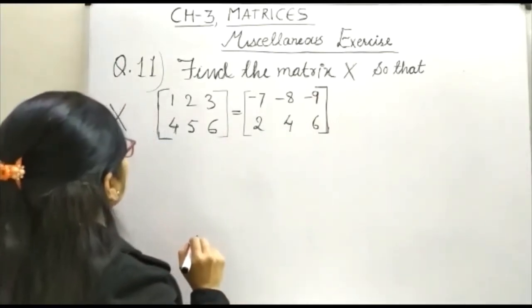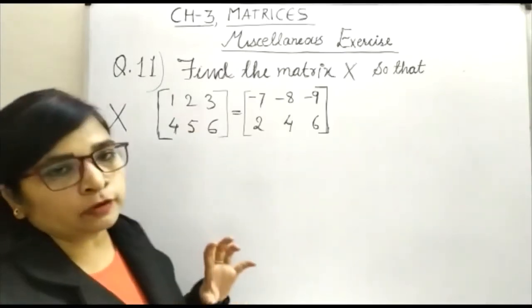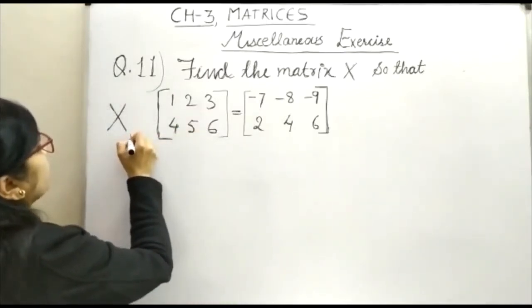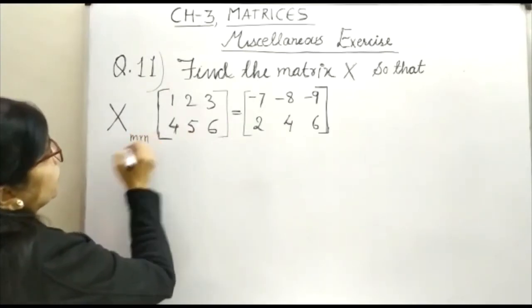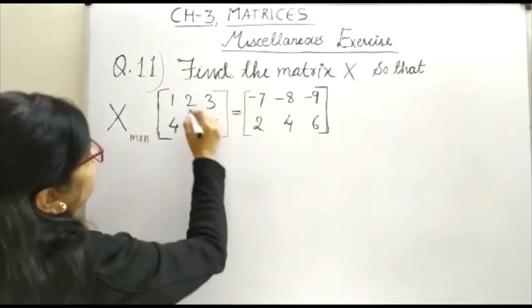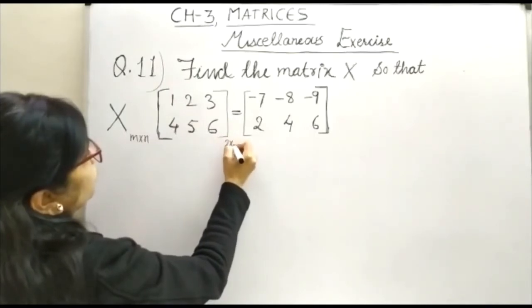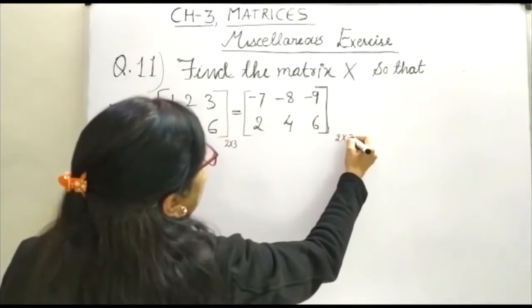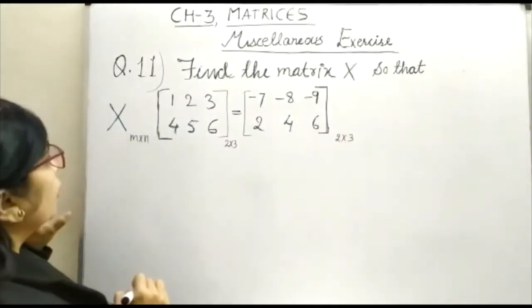Let us see, this X is a matrix, but the order is not given. We will try to work out for the order. Suppose the order of X is M into N, and here the order of this matrix is 2 into 3 and the matrix which is obtained is also of the order 2 into 3.